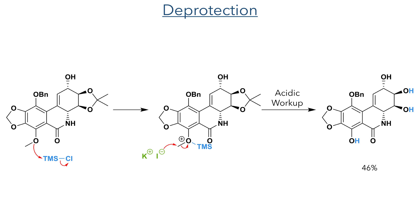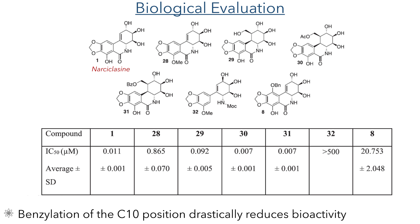With this product now in hand, they tested its bioactivity against human neuroblastoma cells and compared it with compounds that had previously been synthesised by the group. They found that 10-benzyloxynarcyclazine (compound 8 in the figure shown) was much less effective than almost all the compounds they tested previously, with the exception of compound 32 which lacks the lactam ring. This is an interesting result as previous forays into modifying the bay area of the molecule show similar or enhanced activity compared to the parent narcyclazine. Whether this is due to steric or electronic effects of the aromatic ring remains to be seen, but this synthetic route will open up new avenues for functionalisation of this interesting molecule.